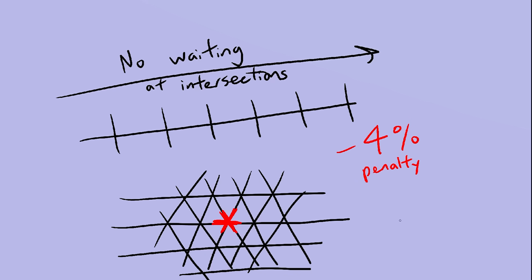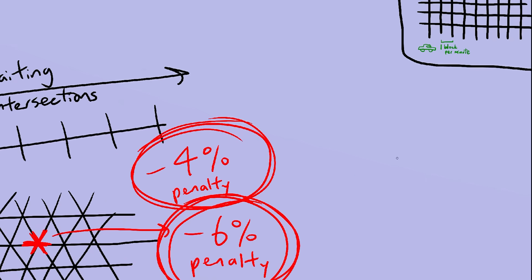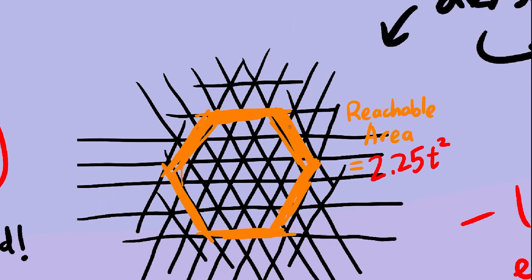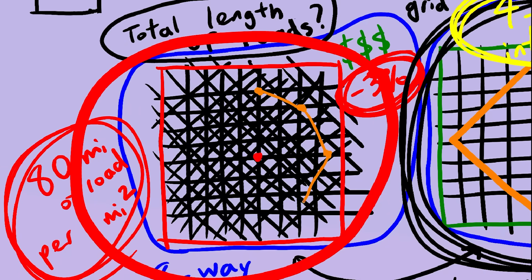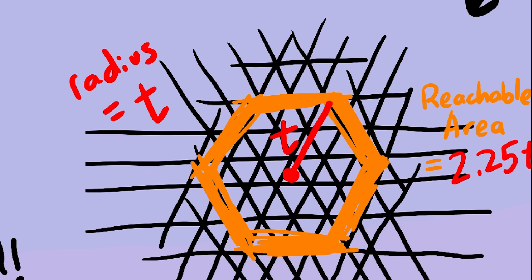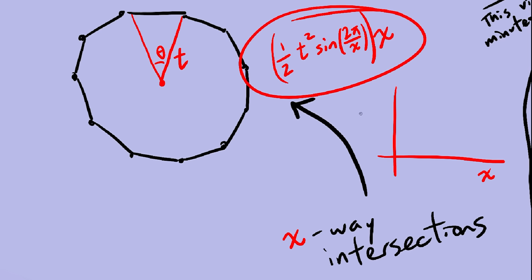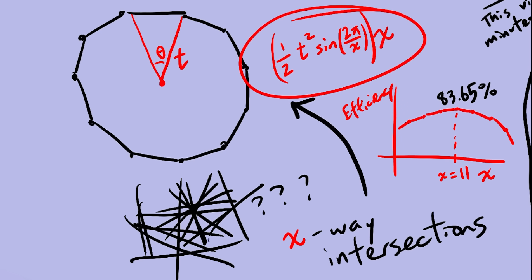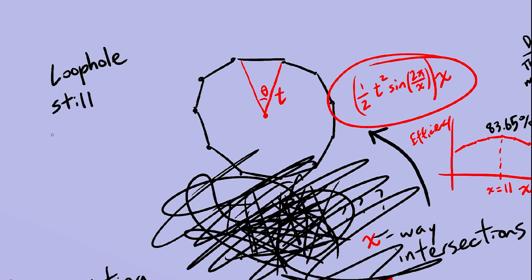What we should have done was keep the old system where cars didn't have to wait at intersections and just slap a penalty on top. Six-way intersections, 6% penalty to the efficiency. Using this new system, 11-way intersections are optimal. How do I know that? Notice how six-way intersections result in a hexagon as the reachable area. And eight-way intersections result in an octagon as the reachable area. Also notice how the radius of these polygons remains constant. This pattern actually continues and you can use some trigonometry in order to solve for the reachable area. And then I just tested a bunch of values. And it turns out, 11-way intersections are optimal with 83.65% efficiency. Don't even ask me what an 11-way intersection grid would look like. Anyway, that's the first problem with this video.